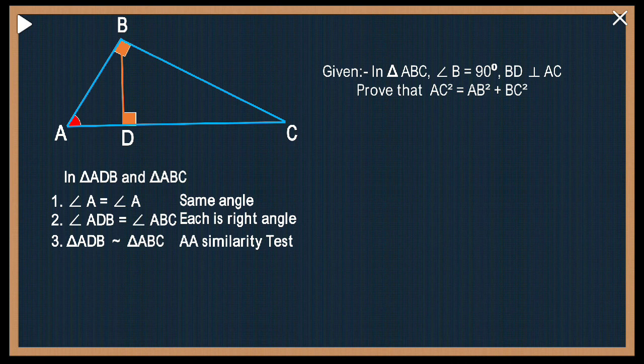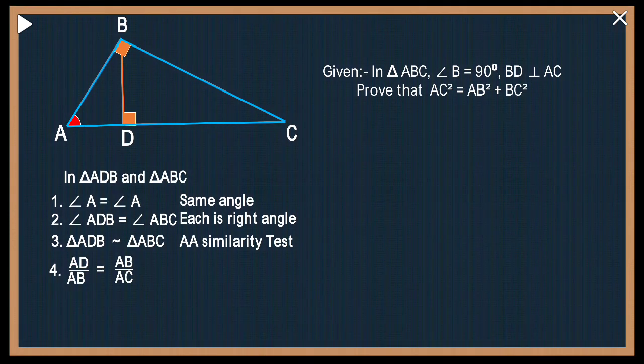Now if the triangles are similar, the corresponding sides for those two triangles are equal, the ratios of them. So I can write AD upon AB equals AB upon AC.